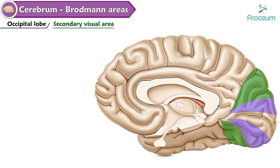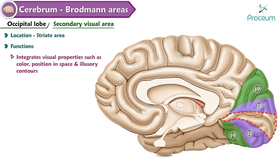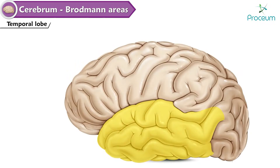Secondary visual area — Areas 18 and 19. Location: striate area. Functions: integrates visual properties such as color, position in space, and illusory contours; correlates visual impulses with past memory to recognize objects.